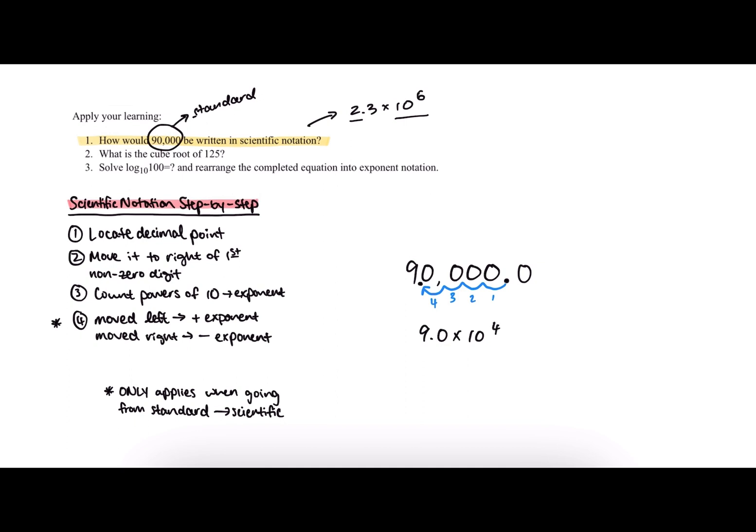But how do we decide if this exponent is going to be positive or negative? Next we look at step number four. If we move our decimal point over to the left, we use a positive exponent. If we moved it over to the right, we use a negative exponent.